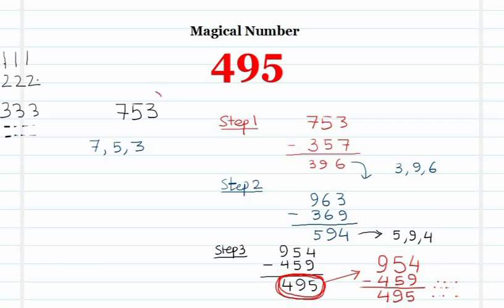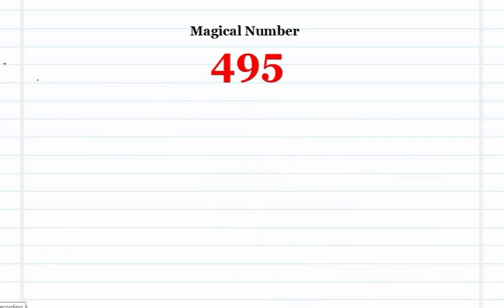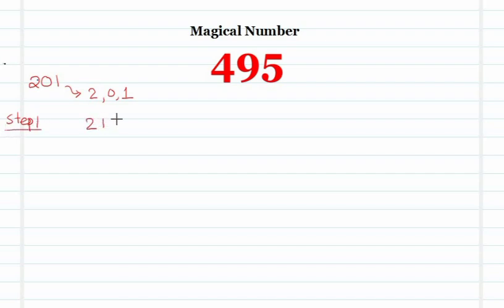Considering the number 753, it requires 3 steps to reach 495. Now let's consider one more example: 201. The digits in 201 are 2, 0, and 1. The largest number formed is 210. The smallest number — which may not be three digits — is written as 012. Find their difference: 198.